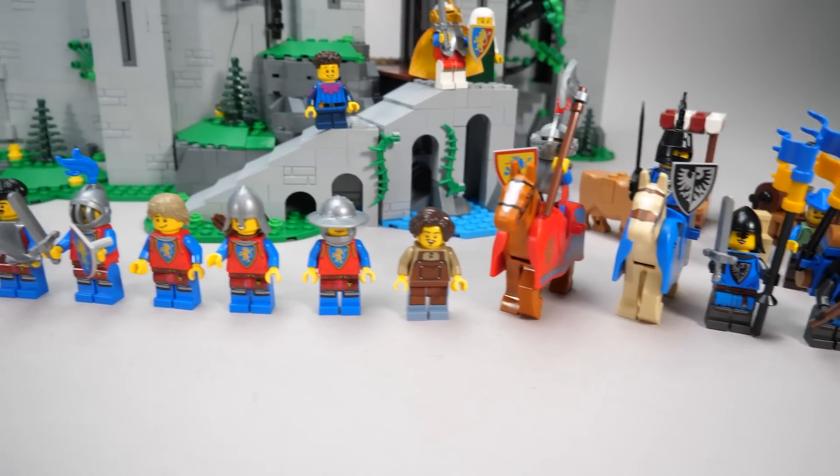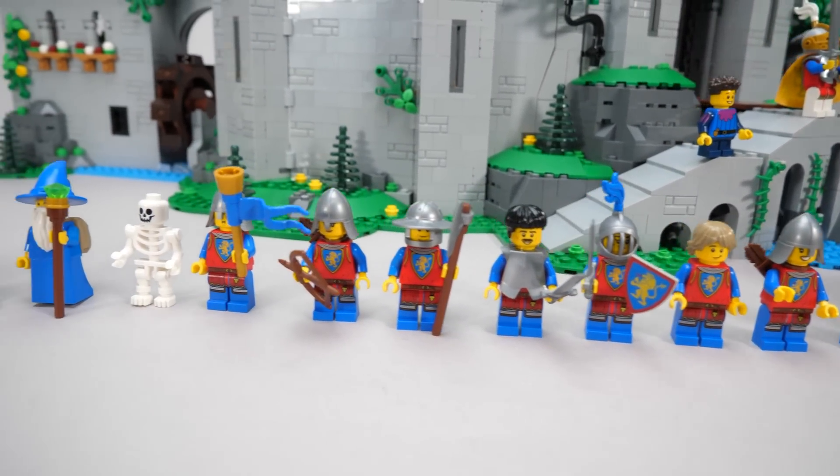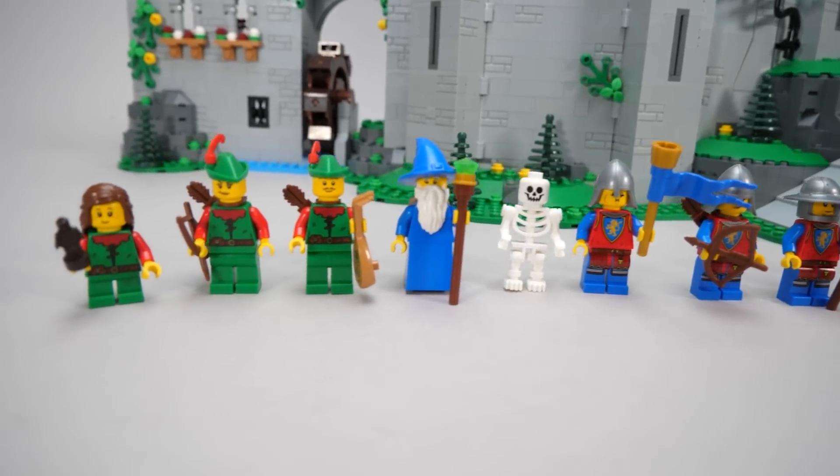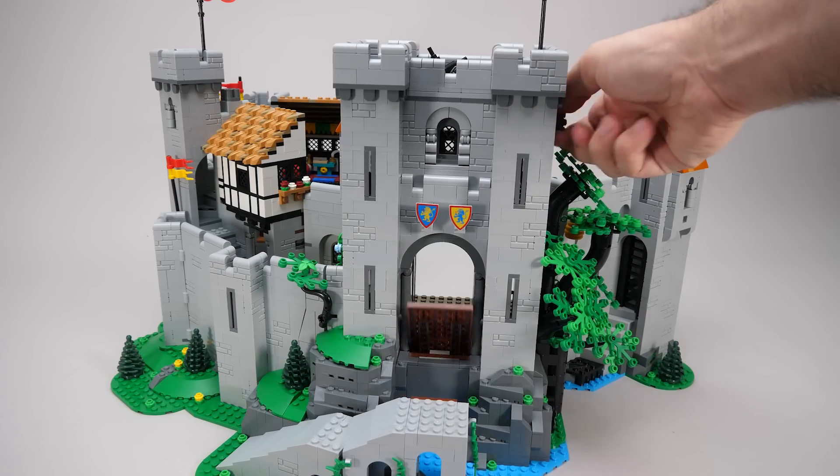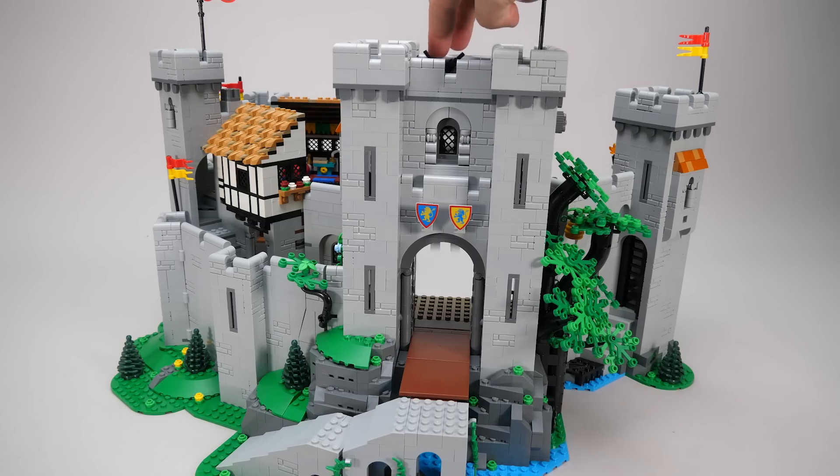Here you can take a look at all the different minifigures we get, they offer tons of playability. But what I like the most are the functional details, and we get a lot of them. The drawbridge with the counterweight mechanism and the hidden trap leading to the dungeons works perfectly, just like the portcullis.